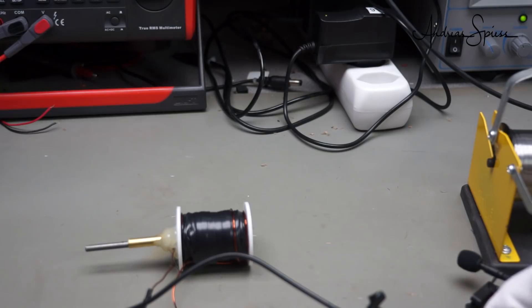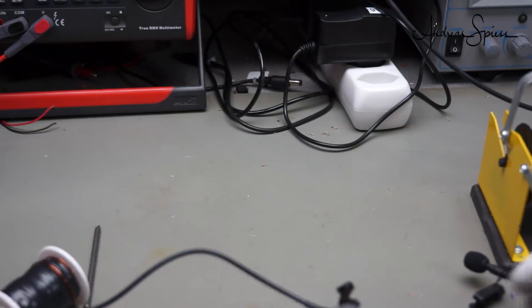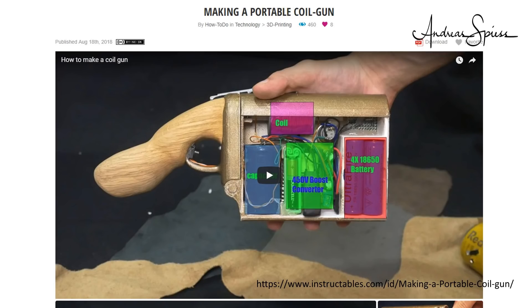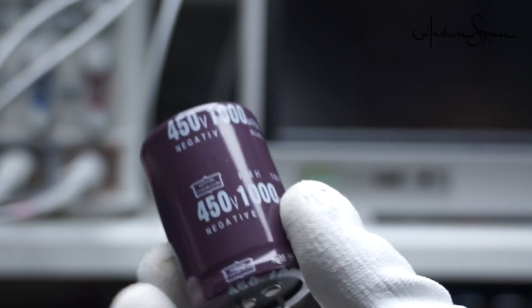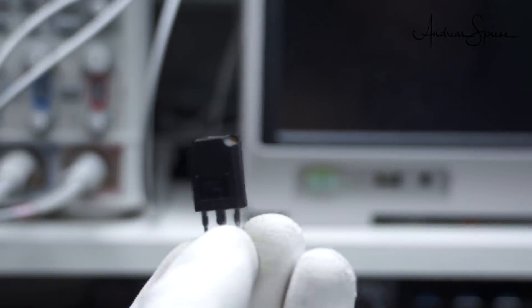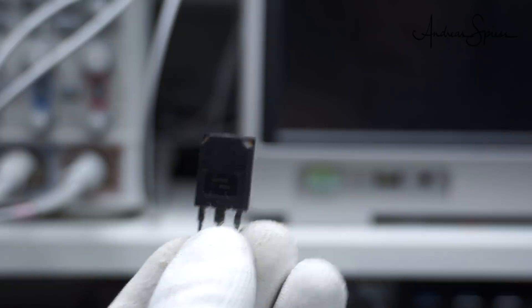If the current is high, the result is a fast-moving projectile. As a rule of thumb, more current and more turns on the coil results in more speed. And more current needs more voltage, of course. When I saw this instructable, I knew this is much closer to what I want. It uses a capacitor to store 400 volts and a thyristor to switch the current. This should provide the needed current.